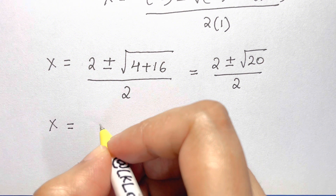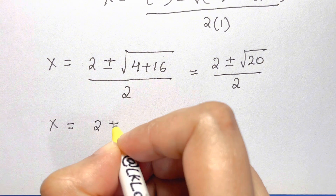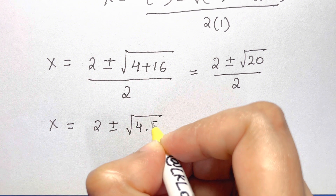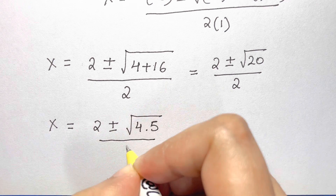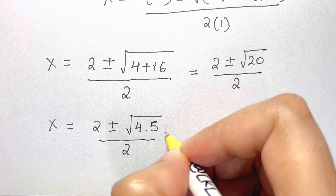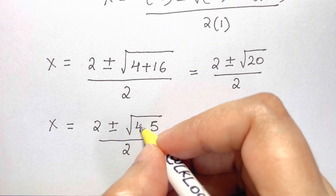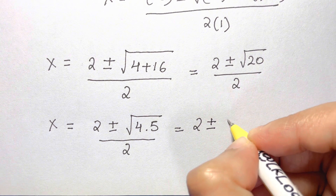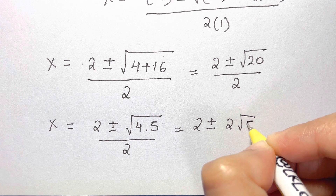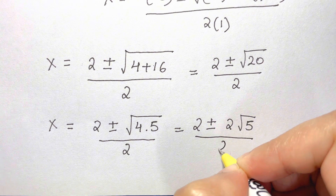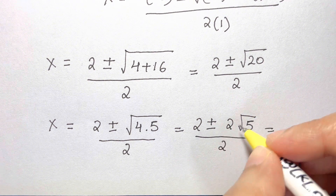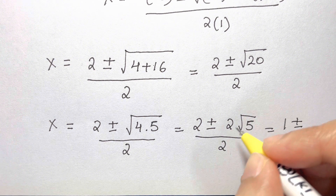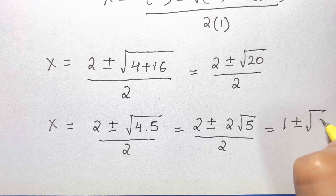Square root of 20 can be written as square root of 4 times 5. Square root of 4 is 2, so we take that out: we get 2 plus or minus 2 root 5, all over 2. Dividing both terms by 2 gives 1 plus or minus root 5.